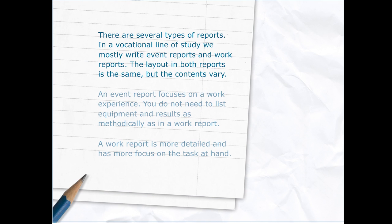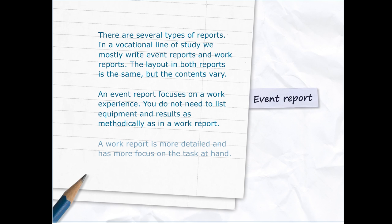There are several types of reports. In a vocational line of study, we mostly write event reports and work reports. The layout in both reports is the same, but the contents vary. An event report focuses on a work experience. You do not need to list equipment and results as methodically as in a work report. A work report is more detailed and has more focus on the task at hand.